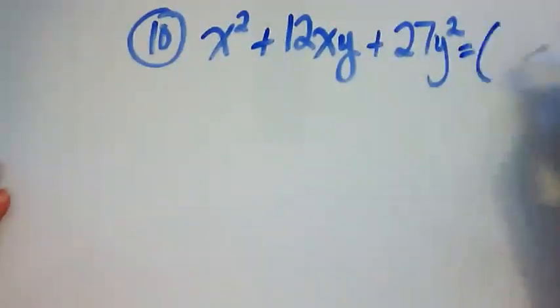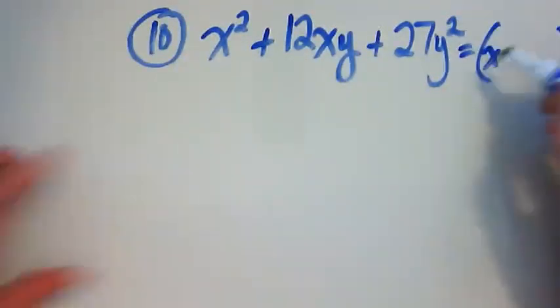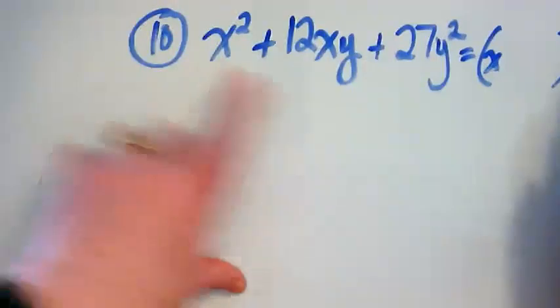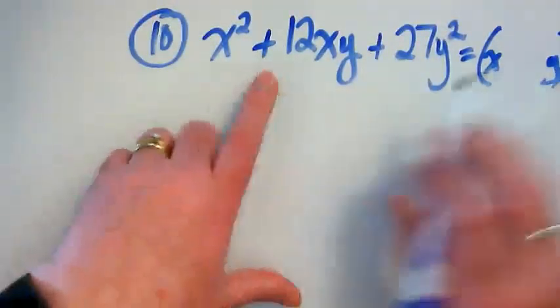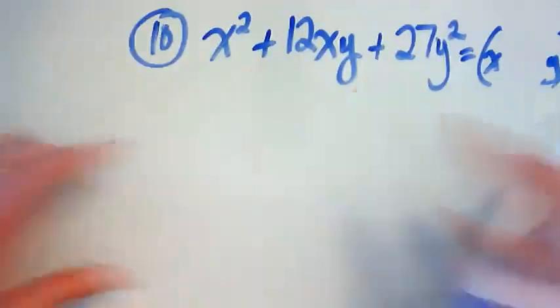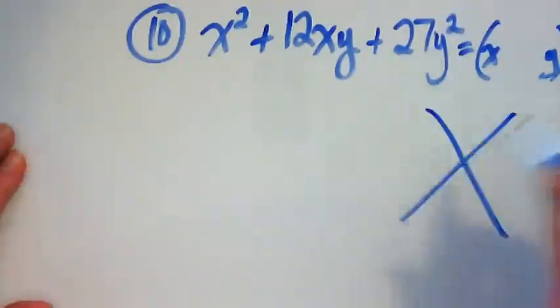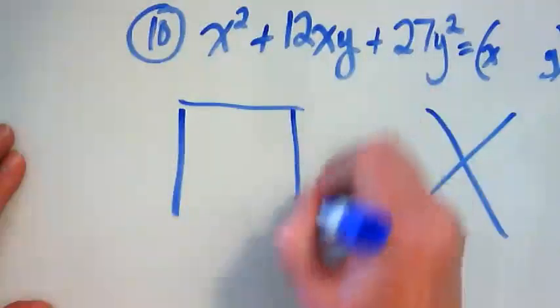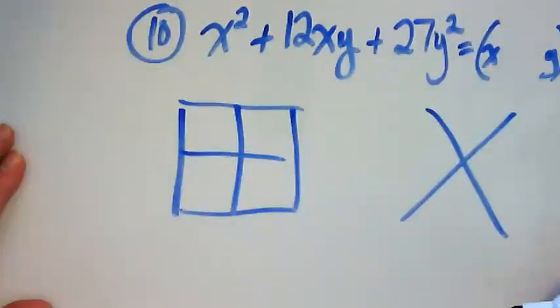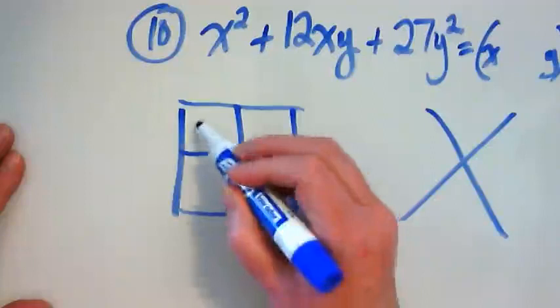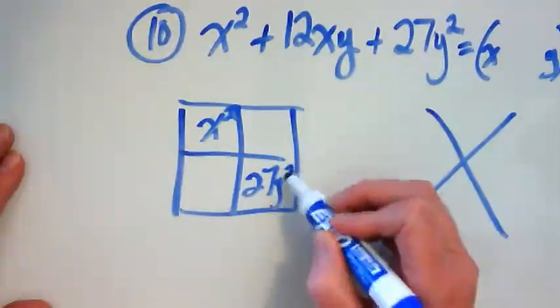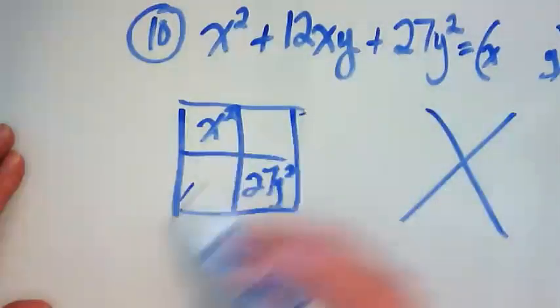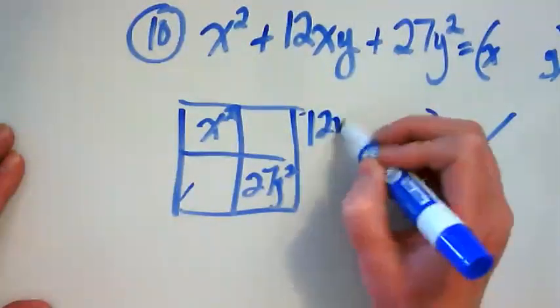We want to know what that equals as a factored pair. Well, I know that the x is going to be in the front and I also know that there's going to be a y in the back and that everything here is positive. So let's start putting together our puzzle and our box and see if we can figure this out. Here, x squared and 27y squared. What ends up here in the middle is going to end up equaling 12xy.